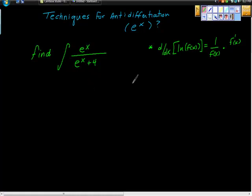It says find the indefinite integral of e to the x over e to the x plus 4. And again, I went back and looked, and I'm starting to recognize patterns here. We're supposed to be trying to recognize patterns, and we know that d/dx of ln of f of x is 1 over f of x times f prime of x.